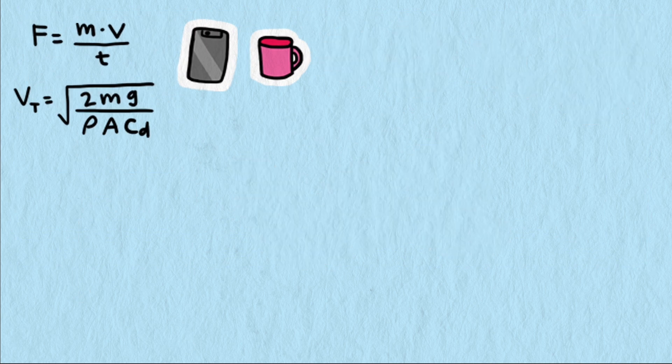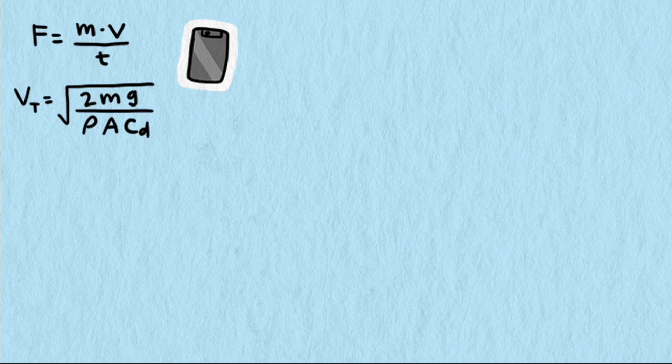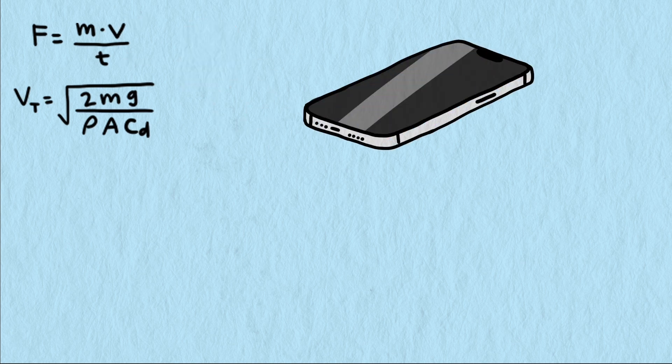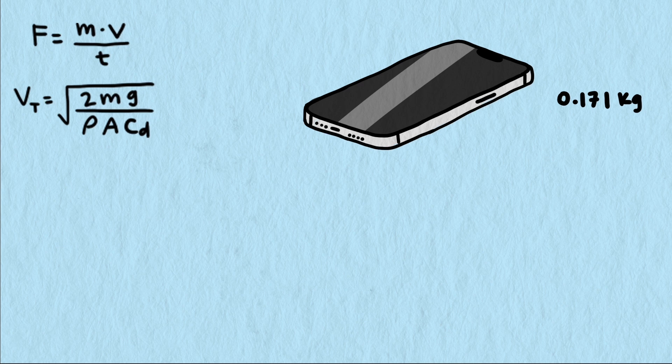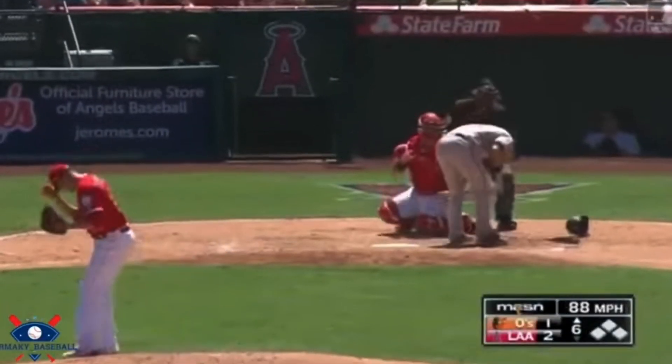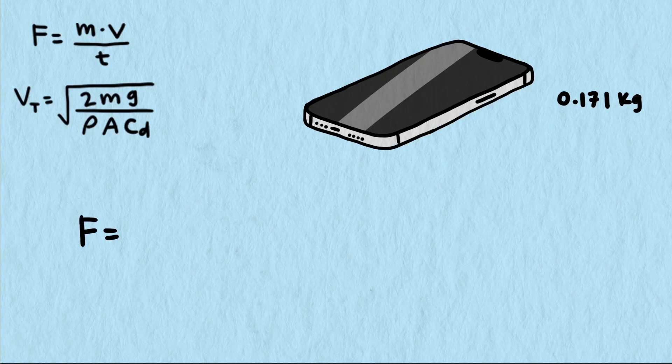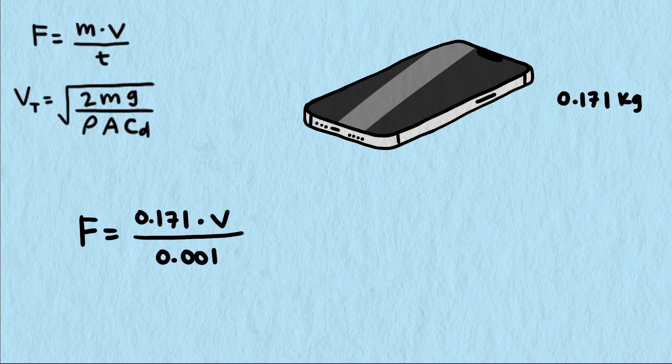Let's start with the cell phone. To find impact force, we need mass, velocity, and contact time. The new iPhone 15 has a mass of 0.171 kilograms. It's also rather hard, so let's assume contact time is similar to our baseball from part 1, 0.001 seconds.